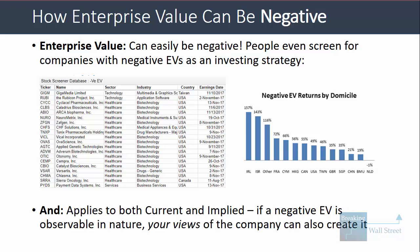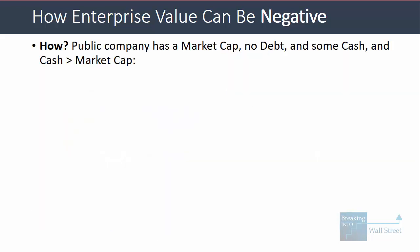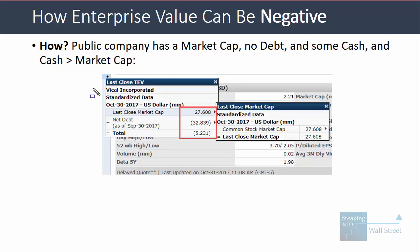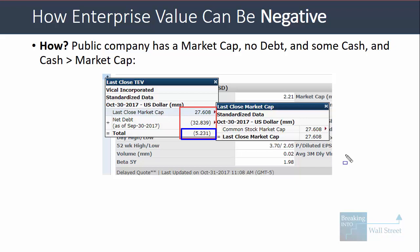This concept applies to both current and implied enterprise value. The easiest scenario is if a company has a market cap, no debt, and some cash, and the company's cash exceeds its market cap. For example, take Vical Incorporated — it was on that list and as of recently its market cap was $27.6 million, but it had cash of around $32.8 million and no debt, meaning its current enterprise value is negative $5 million, according to Capital IQ — a pretty reliable source.